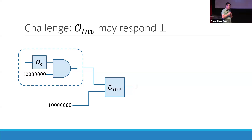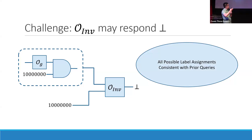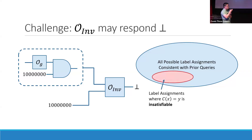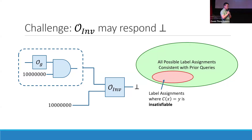The algorithm we use is to think about sampling all labels for group elements lazily as queries are being made. Normally how we answer an inversion query: imagine there is a large, doubly-exponential set of all possible label assignments consistent with prior queries. Within here, there is a very small subset of label assignments where the circuit is not satisfiable, and everything else has a satisfying assignment.